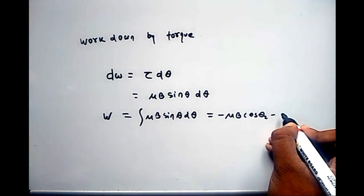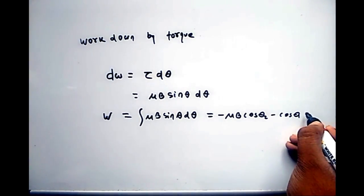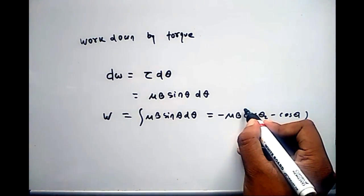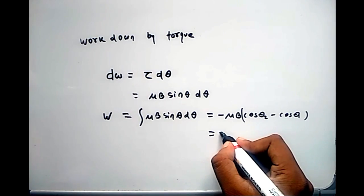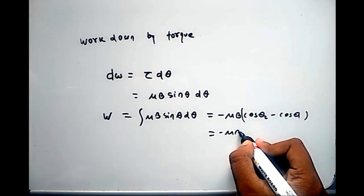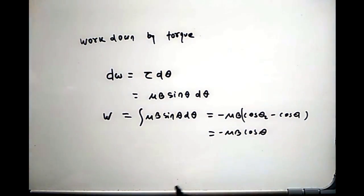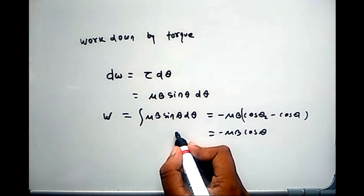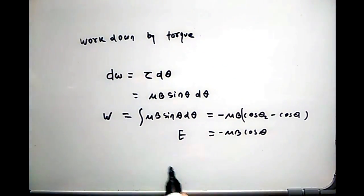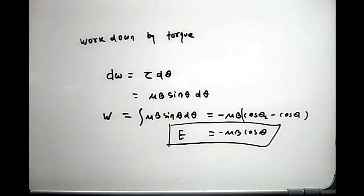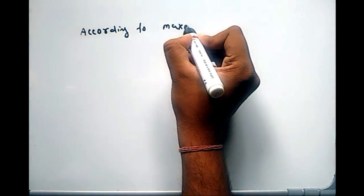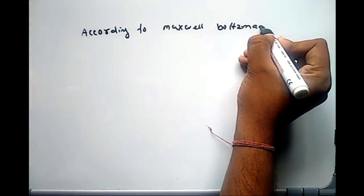The bar magnet starts perpendicular to the magnetic field, so θ starts from 0 to π/2. In general, the energy expression becomes E = −Bμ cosθ. According to the Maxwell-Boltzmann distribution, the number of atoms having momentum p to p + dp...